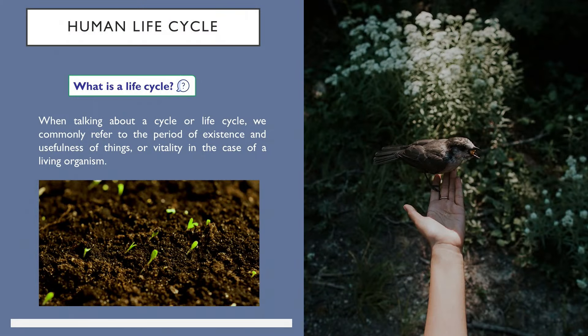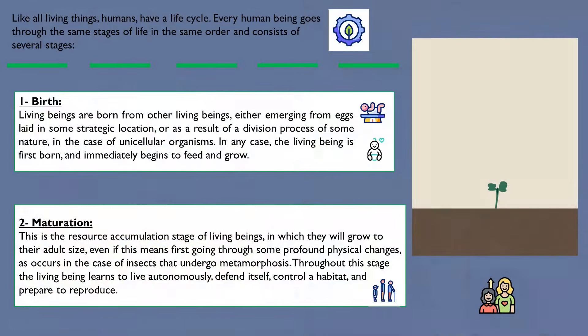Life Cycle in Humans. The life of human beings and most living things are made up of cycles. When talking about a cycle or life cycle, we commonly refer to the period of existence and usefulness of things, or vitality in the case of a living organism. In humans and most living beings, it consists of several stages: Birth, Maturation, Reproduction, and Death.